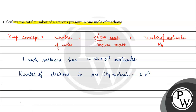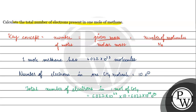So the total number of electrons in one mole of methane will be equal to 6.022 × 10²³ multiplied by 10, which equals 6.022 × 10²⁴ electrons present in one mole of methane.